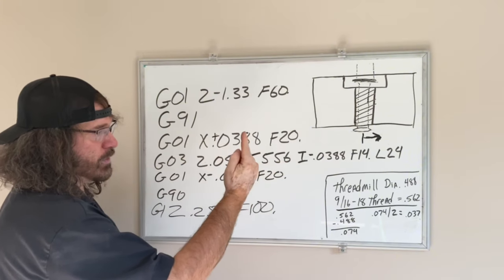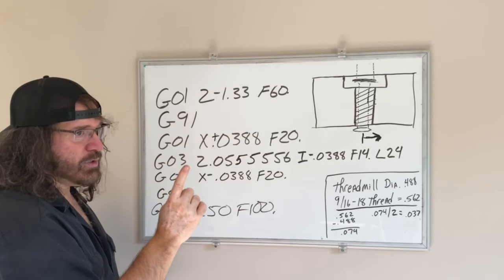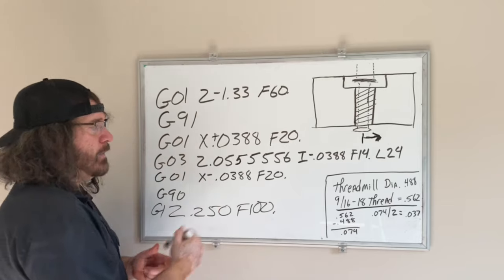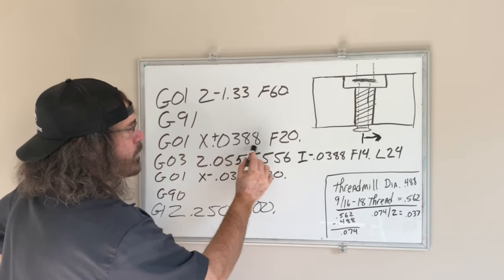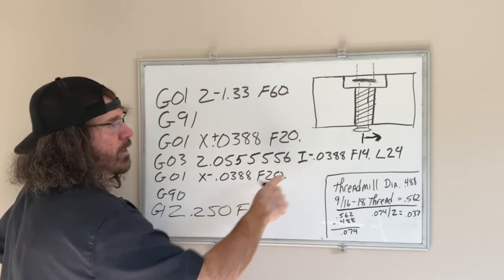So my Z has to travel this amount every revolution. So the I code is telling the machine, since we are off center, to look back. Whatever I shifted over I need to have the I code to tell it to look back. So that's a negative call.